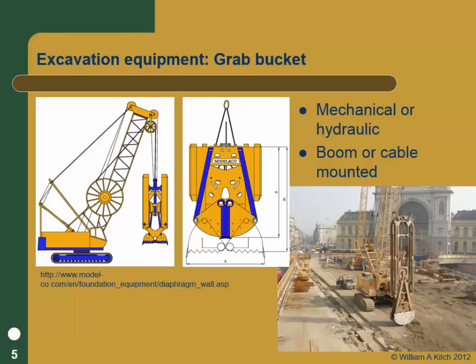There are basically two types of excavation equipment. There are grabs or buckets — basically like a grab bucket but shaped to be long and skinny. They can be mechanically or hydraulically operated. For shallower walls, they can be boom-mounted on a hydraulic boom. For deep walls, they'll be cable-mounted — you really don't want an 80-foot boom sticking up above ground.